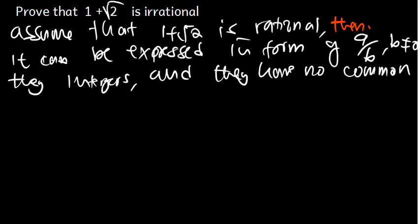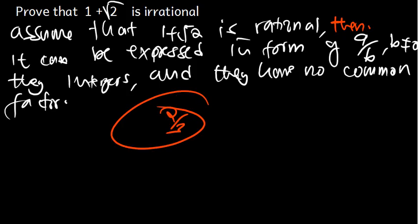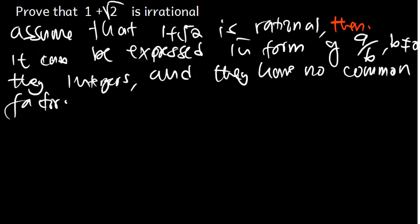When we say they have no common factor — for example, take 2 over 3. There is no common factor between them. If you divide, you get 0.6666 repeating, which is a rational number. So we assume 1 plus the square root of 2 is rational, meaning it can be written as a over b where a and b are integers with no common factors.